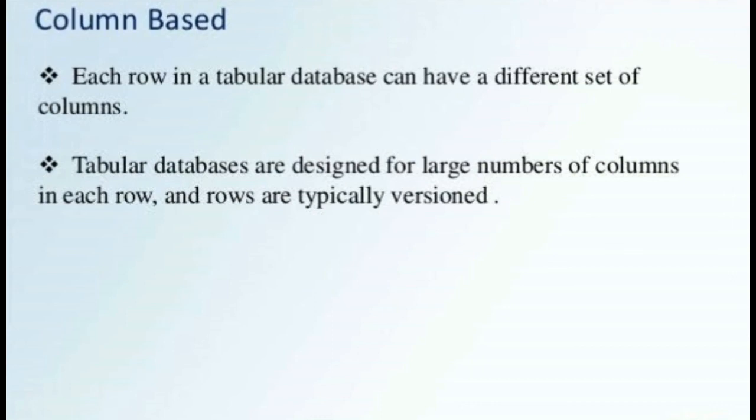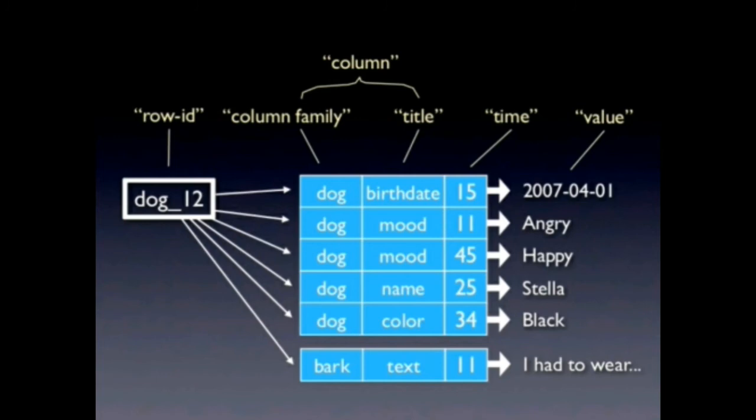For example, a row has a row ID and belongs to a column family. Each column has a column name such as title and a timestamp value. The column data is stored in the database. In the next class, we will see more details.